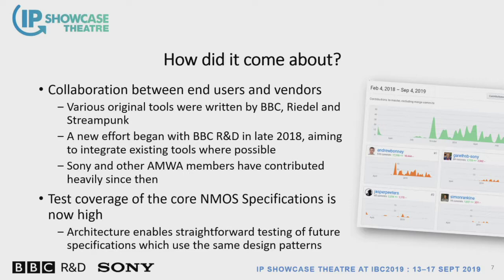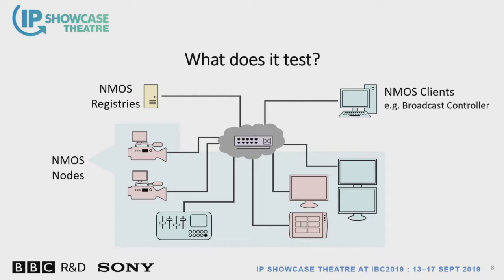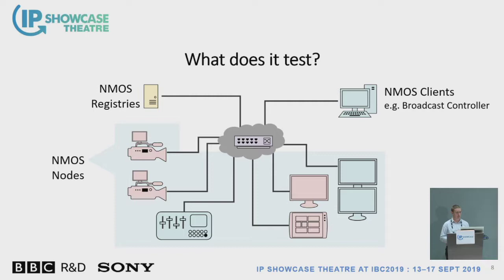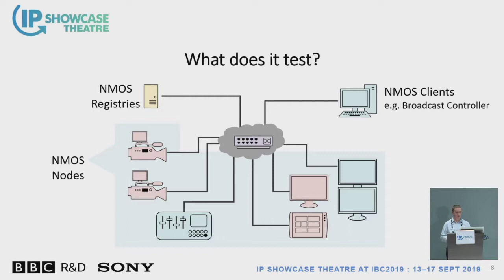For the most-used specifications like IS-04 and IS-05 you can have great confidence in getting a very thorough test. The tool tests simple NMOS system components: NMOS nodes — cameras, microphones, mixers, displays — connected to a network switch, an NMOS registry holding IS-04 data, and NMOS clients such as broadcast controllers. Secure communication is also a key area, forming the foundation of the EBU technology pyramid. At the system level there are resources defined in JT-NM Technical Recommendation 1001 (future IS-09), a network controller (IS-06), and an authorization server (IS-10, currently work-in-progress).